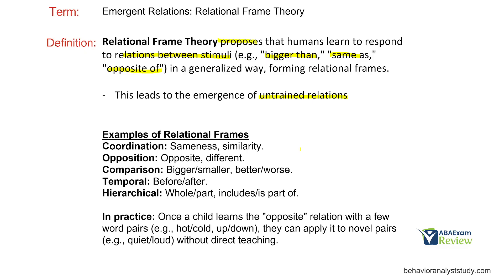Some relational frames include sameness or similarity — we group things by how similar they are. We also group things by how opposite or different they are: bigger, smaller, better, worse. Before, after, whole, part, includes, is part of — hierarchies. We are putting all these things into mental frames and then forming relationships.